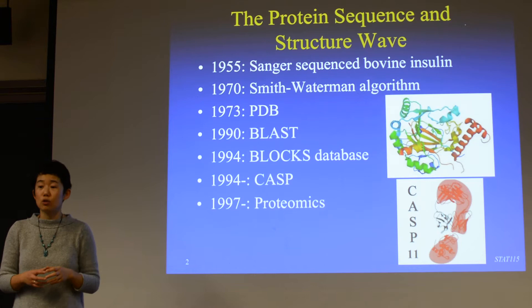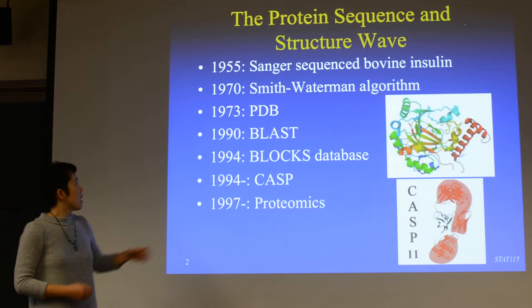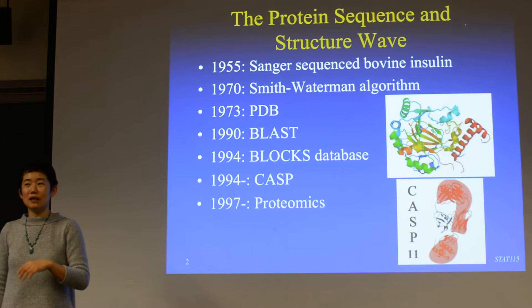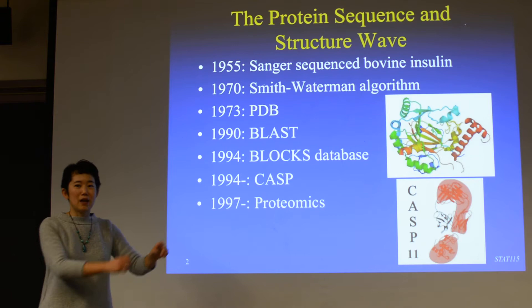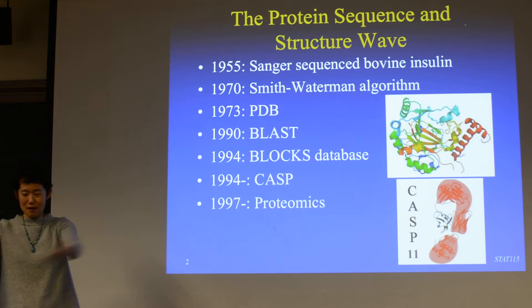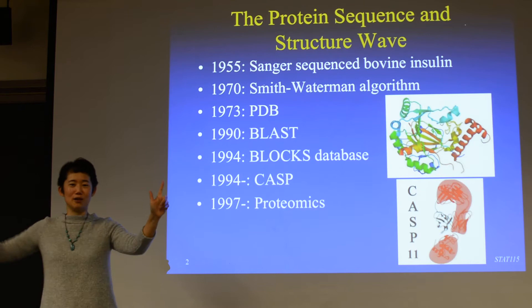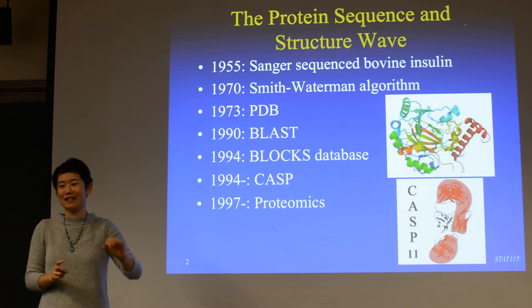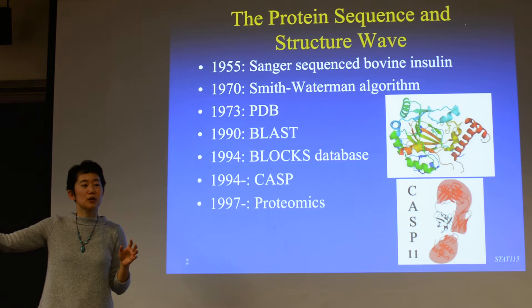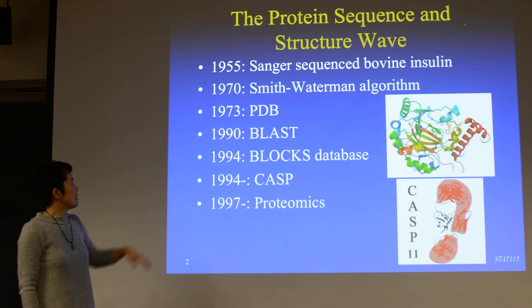In 1973, the PDB was created as a database to store protein structures, because once you know the protein structure you can understand its function a lot better. As more and more sequences came along, a new algorithm had to be developed — BLAST. When I was a graduate student, it was said to be the most widely used informatics algorithm. Initially, every new sequence you align with one, then two, then it becomes a hundred, a thousand — the database keeps growing. So when you have a new sequence, the question is: can you find something similar in the database without aligning one by one? That's what the BLAST algorithm gives us.